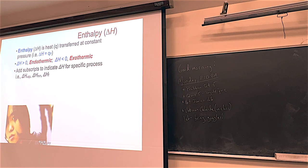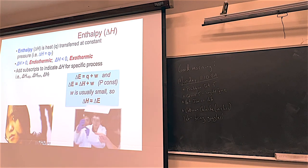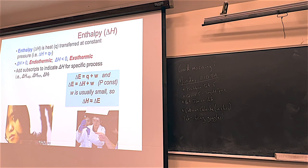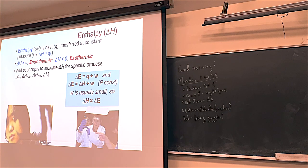The same signs apply to Q: negative Q is exothermic, positive Q is endothermic. Back to the first law of thermodynamics: delta E = Q + W. In our Chem 200 classes, the heat is enthalpy, and because work is usually not relevant at constant pressure, the energy can usually be measured through just the enthalpy. That's why chemists get so focused on enthalpy.